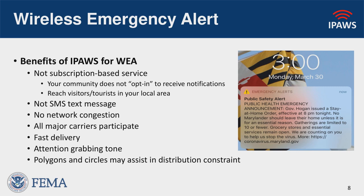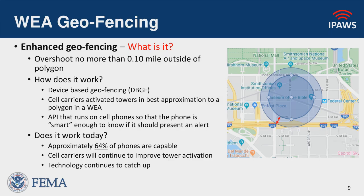We support polygons and circles with the wireless alerts. This is important because it helps constrain distribution — very important in very large counties or large states. For example, in California you wouldn't want to issue an alert for the entire state for something happening in Northern California. We are working toward making this even better with a new feature called enhanced geofencing, where an alerting authority can draw a polygon and 100% of the phones located within that polygon should receive the alert.